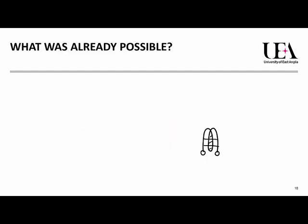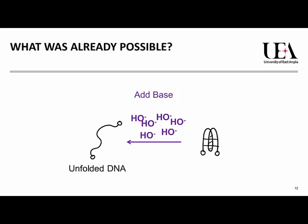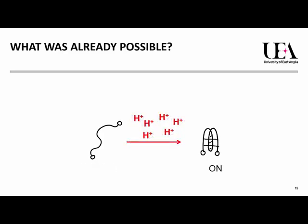Once the DNA is folded, we can unfold it. To do this, we need to get rid of the acid we just added — so we add something to neutralise it, which we call a base, or you might know it as an alkali. If we add the base, we then get unfolded DNA again. This system can be used as a switch: the DNA in the two different conditions has completely different shapes, so we can recognise this as either folded or unfolded — on or off.